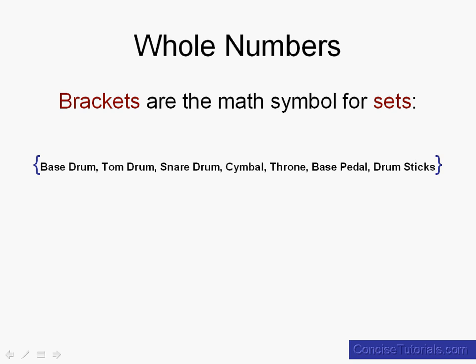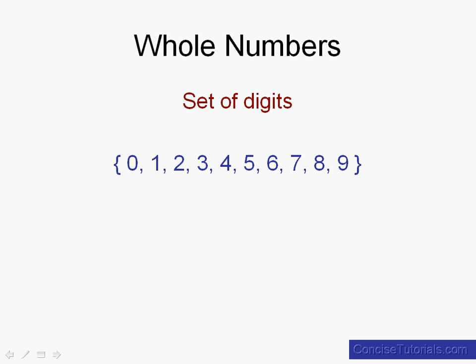But in math we're usually talking about numbers and so let's look at an example of numbers that make up a set. If we go back to our first tutorial for our pre-algebra series we talked about digits. And so here we show the digits in brackets to say this set of objects, the 0, 1, 2, 3, 4, 5, 6, 7, 8, 9, they're a set because they're put into these brackets and they're a set that we call digits. So this is set notation for the digits.